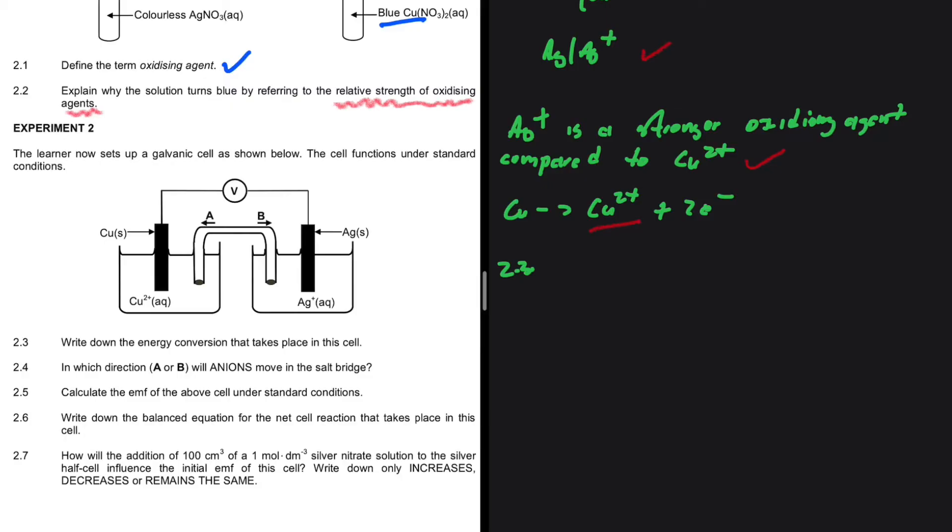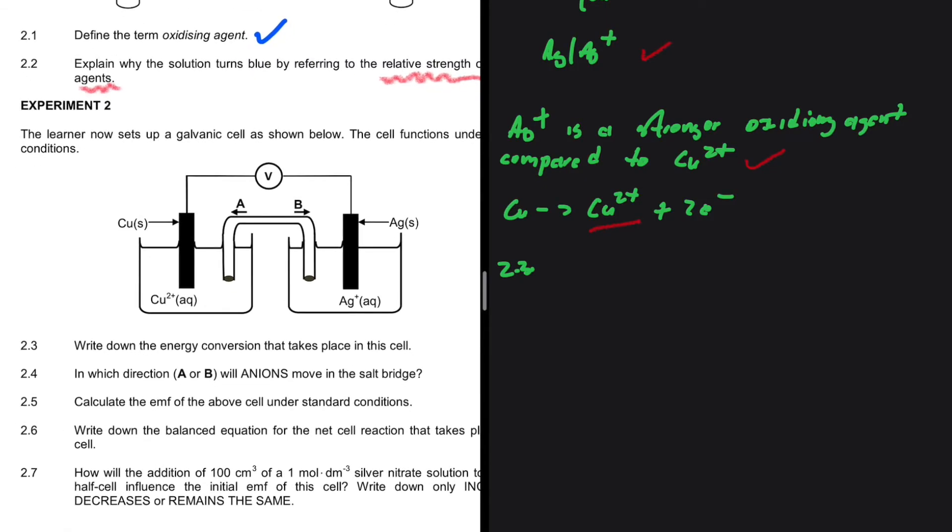2.3: write down the energy conversion that takes place in this cell. We know the energy conversion that takes place in a galvanic cell—that is chemical energy to electrical energy.